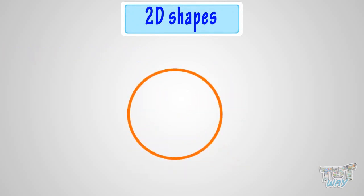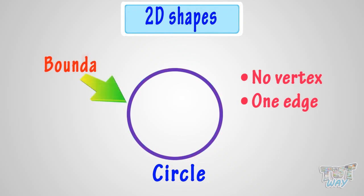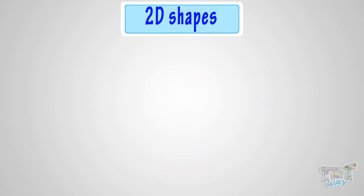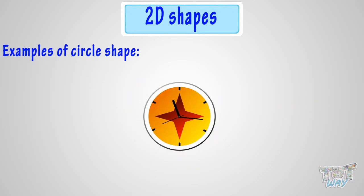This shape is called a circle. It has no vertex, and it just has a boundary which is its single edge. Think of things that are circle in shape — these are various things that are circle in shape.